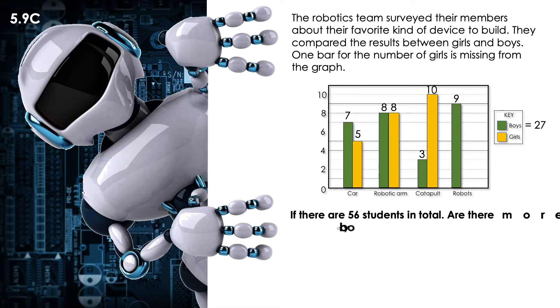If there are 56 students in total, are there more boys or girls? I already know that we have 27 boys. Now I have to find how many girls. So I'm going to combine five plus eight plus ten. That is going to be equal to 23.